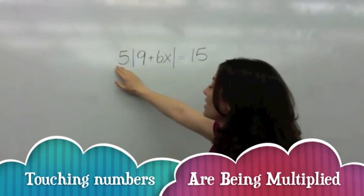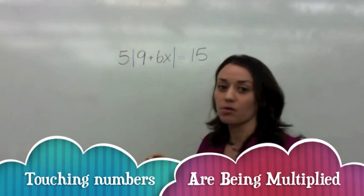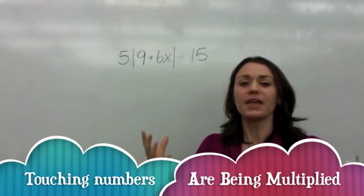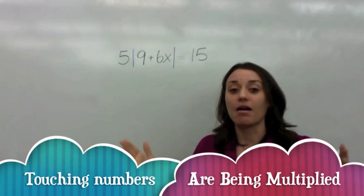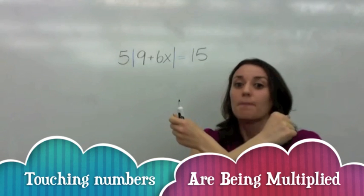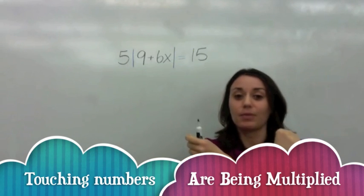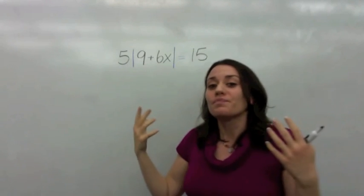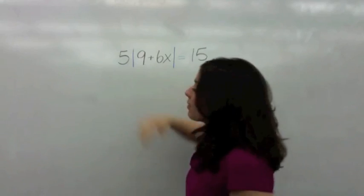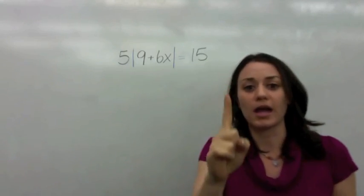When a number touches the absolute value or any term that means that they are being multiplied, right? They're being multiplied and you know when they're being multiplied that means that they're married, right? They are one.